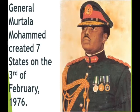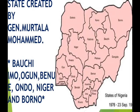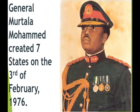Then another era of state creation came. General Murtala Mohammed created seven more states on the 3rd of February 1976. This brought the total from Gowon's 12 states plus his own seven states to 19 states altogether. The states created by General Murtala Mohammed include Bauchi State, Imo State, Ogun State, Benue, Ondo, Niger, and Borno states.